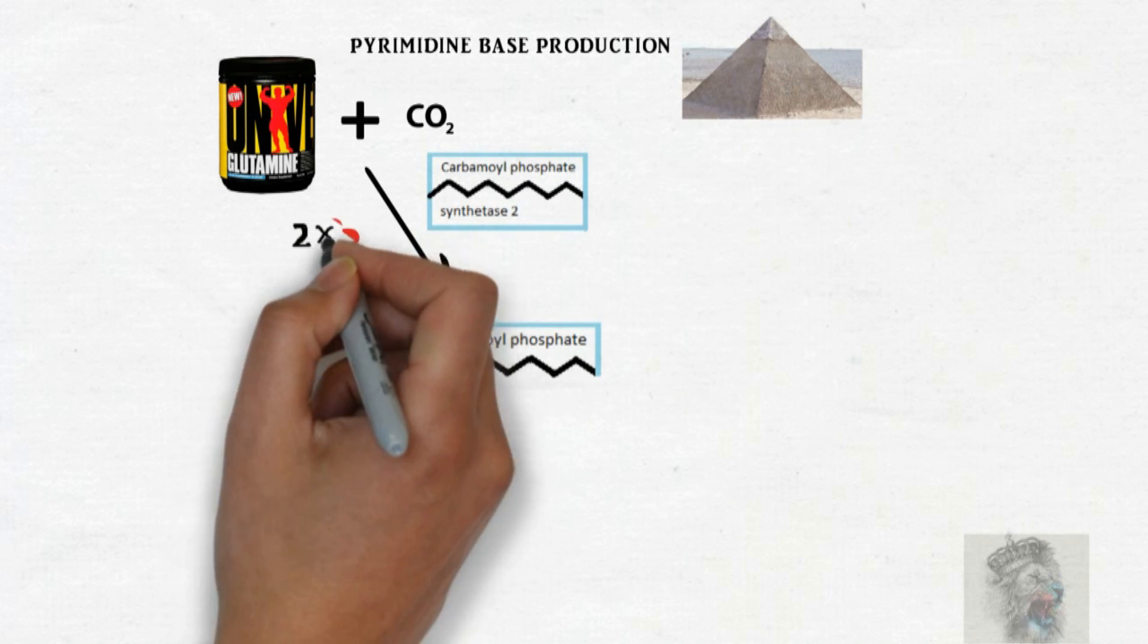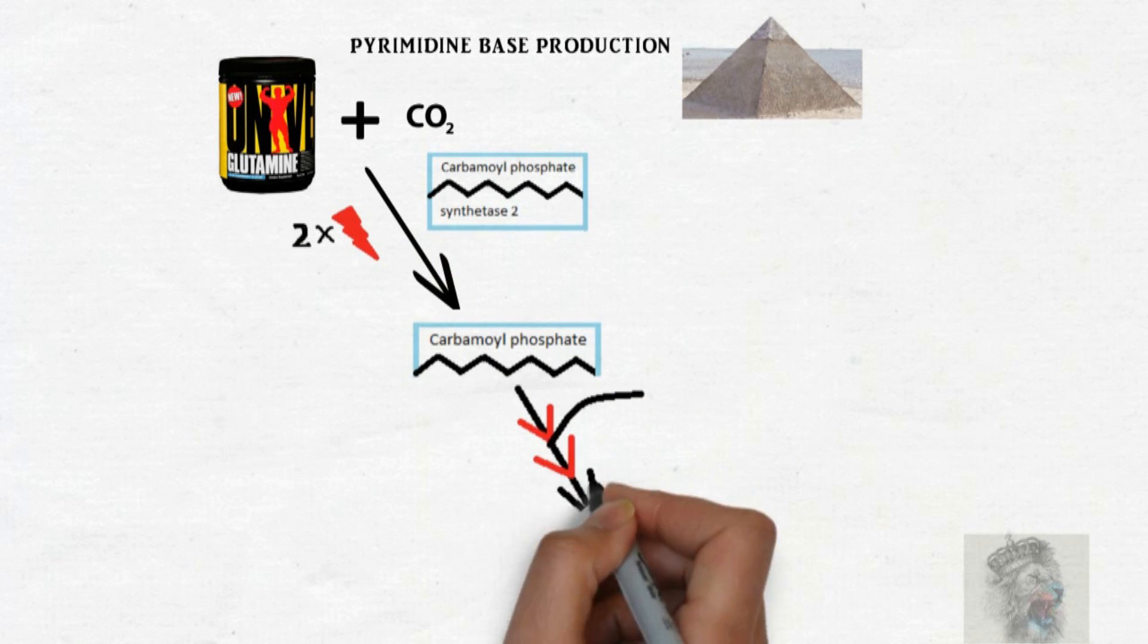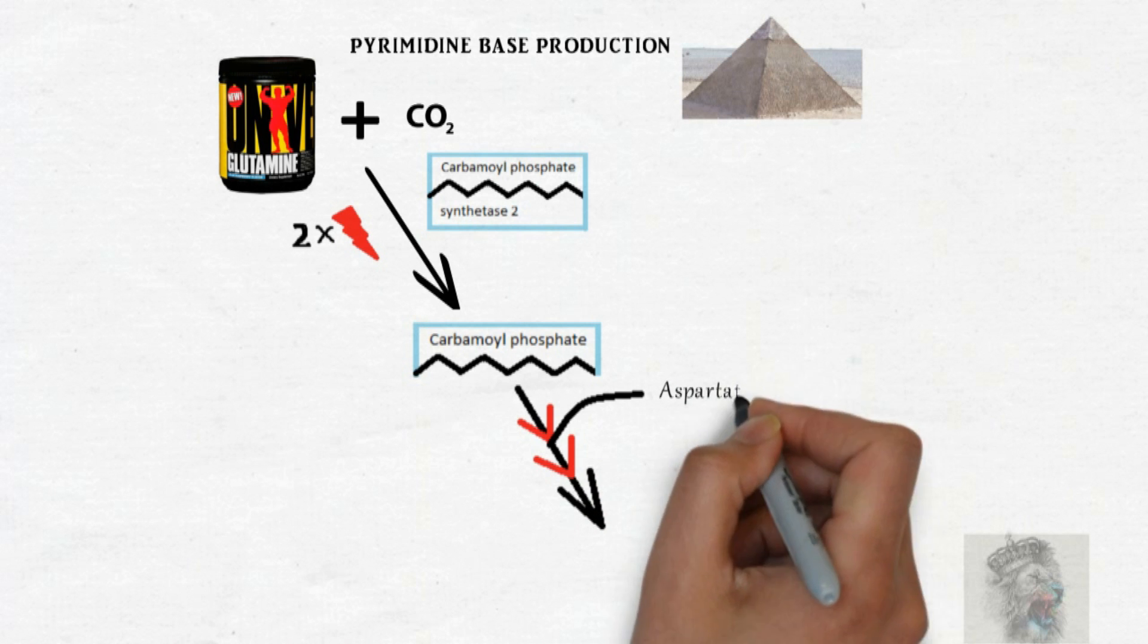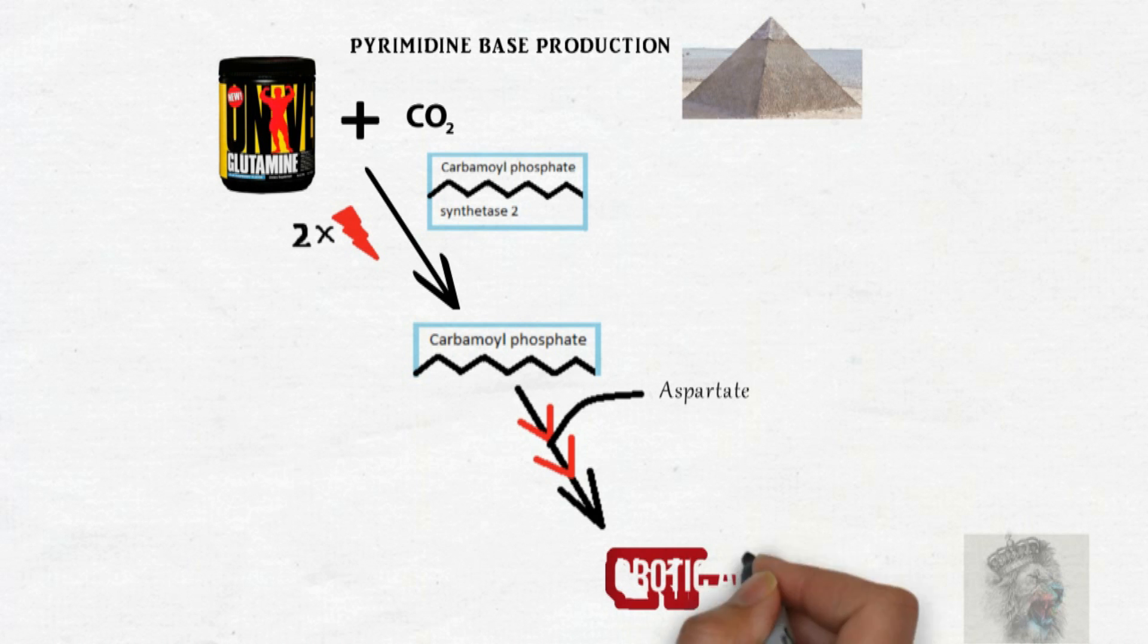This carbamyl phosphate along with aspartate then converts into orotic acid under three steps. For your high-yield information, I can tell you that excess orotic acid in urine causes orotic aciduria.